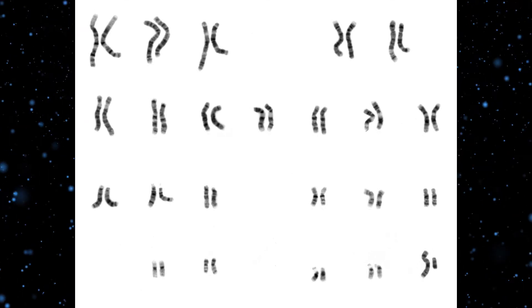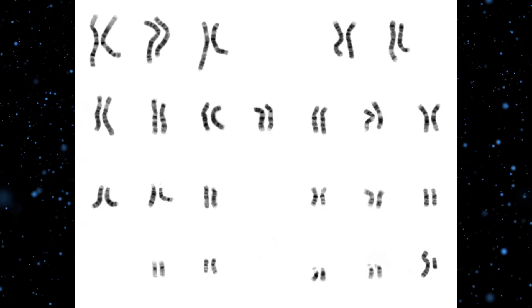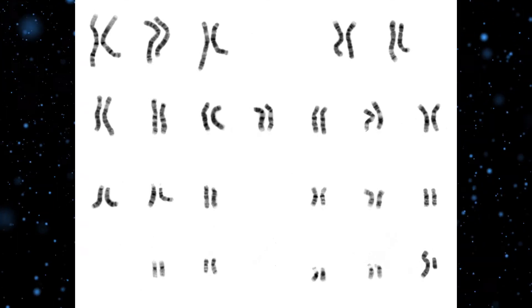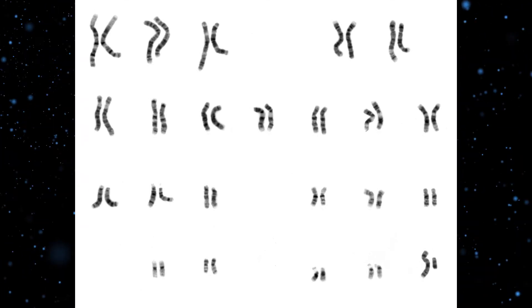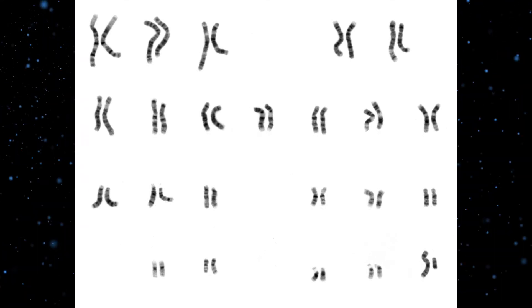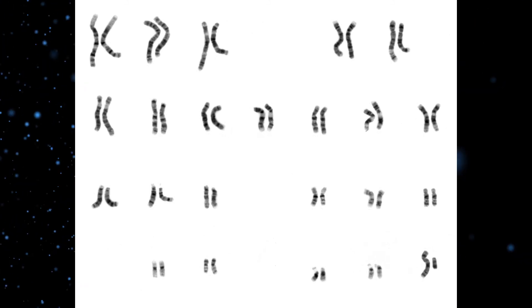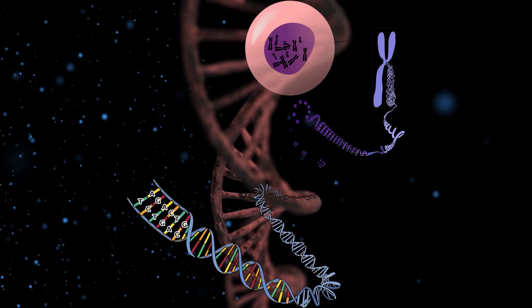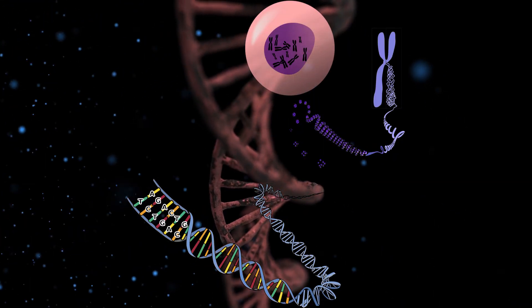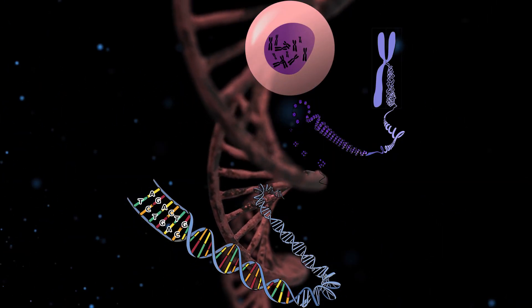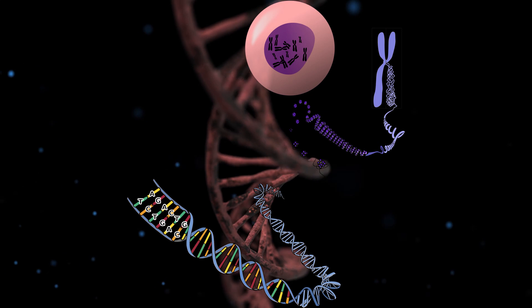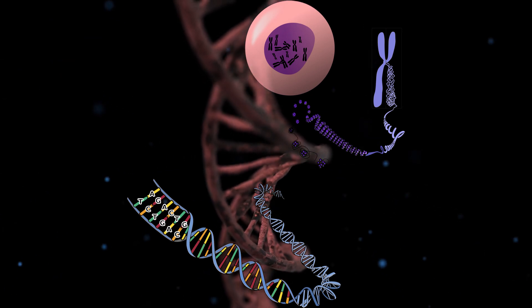It would appear that whatever pressure drove those to be combined into a single chromosome in humans isn't there for apes. And so it's hard to say that just because we've reduced the number, we're more complex.